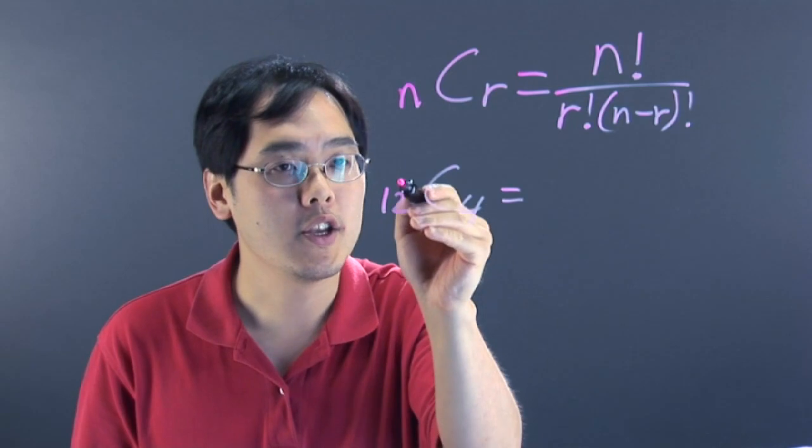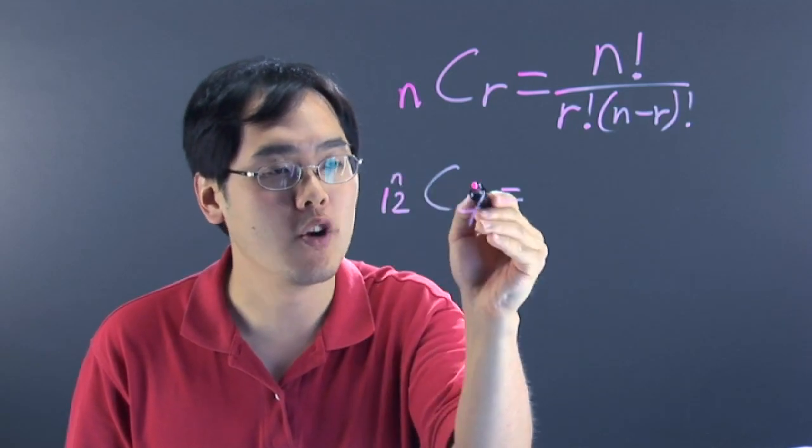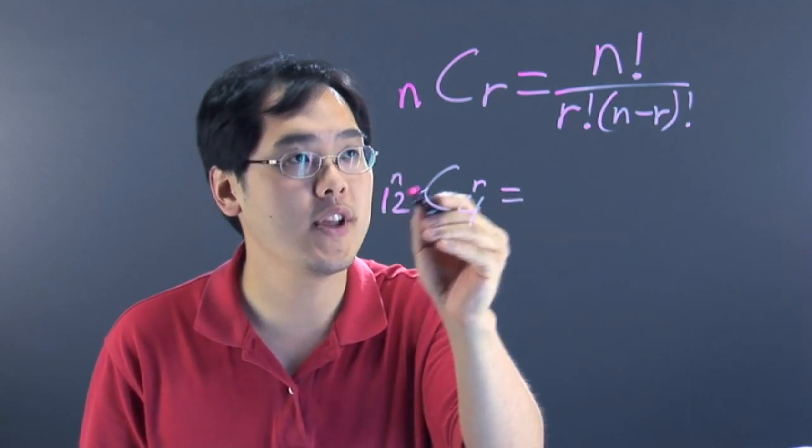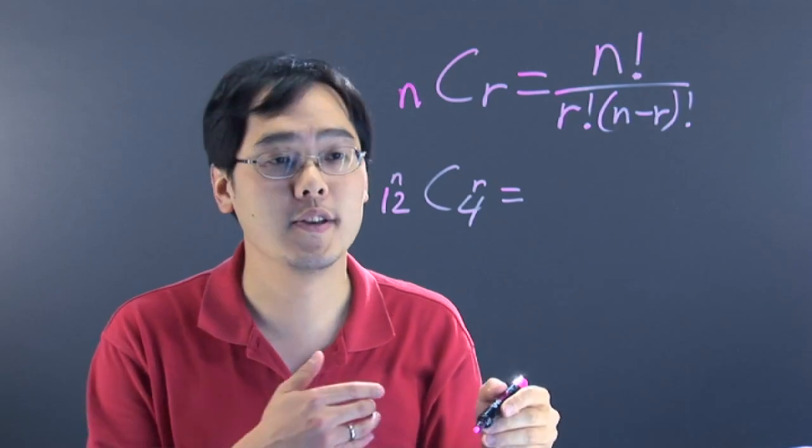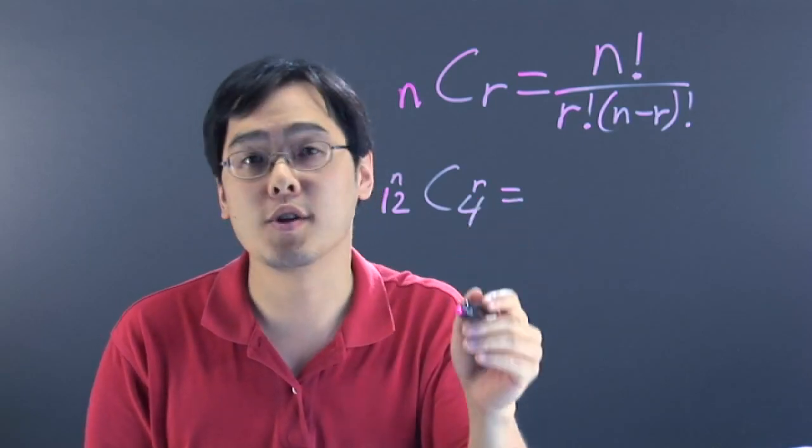So plugging it in, your N is 12, your R is 4. So basically for every N you see you plug in 12 and for every R you see you plug in 4.